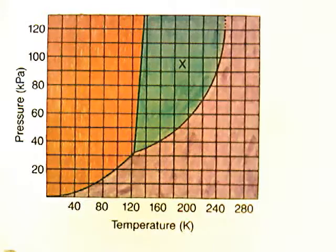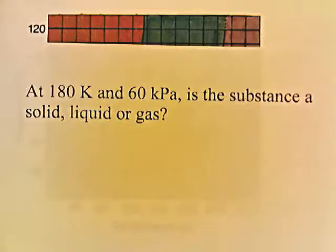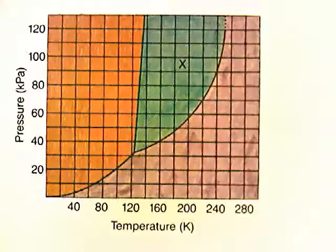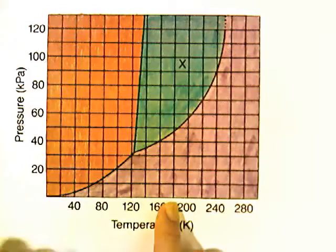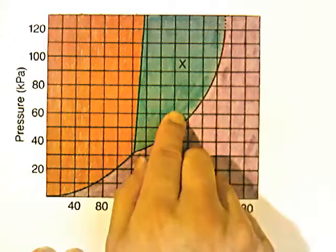At 180 Kelvin and 60 kilopascals, is the substance a solid, liquid, or a gas? 180 Kelvin and 60 kilopascals — going up, it falls into the blue region, so it's going to be a liquid.